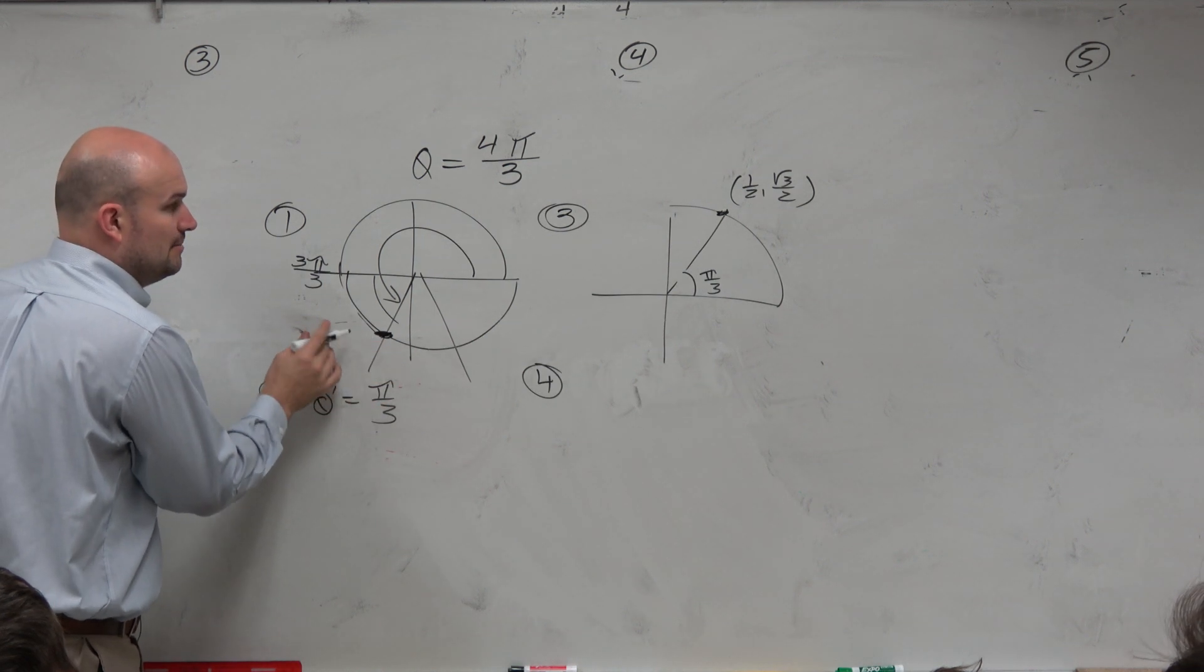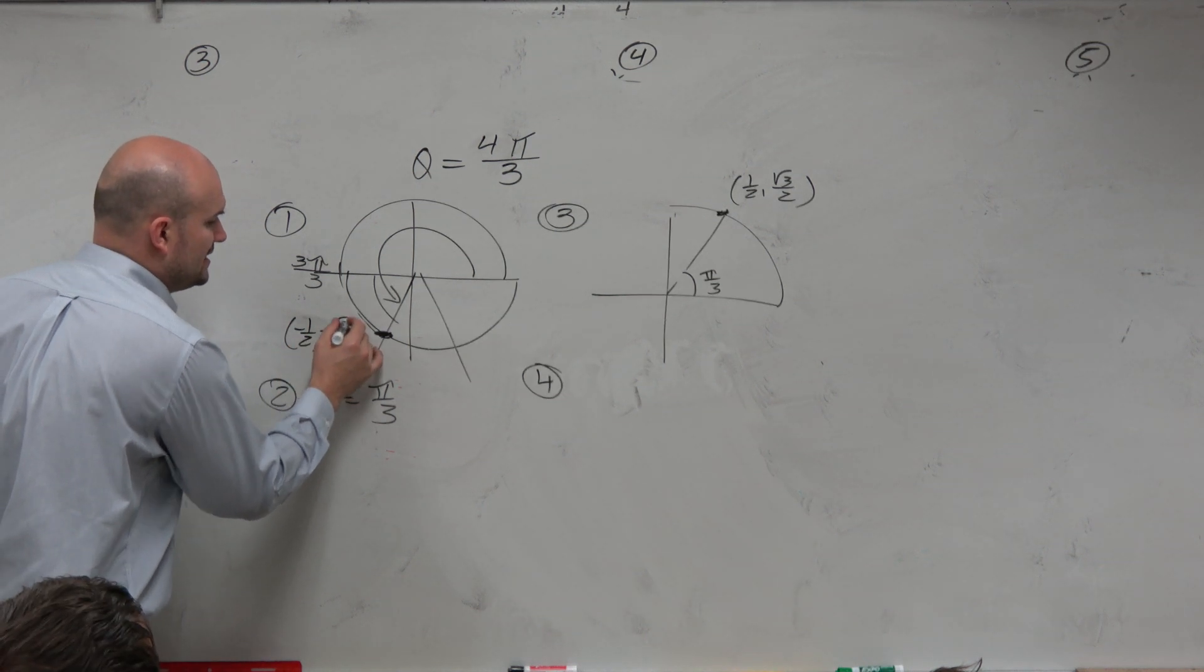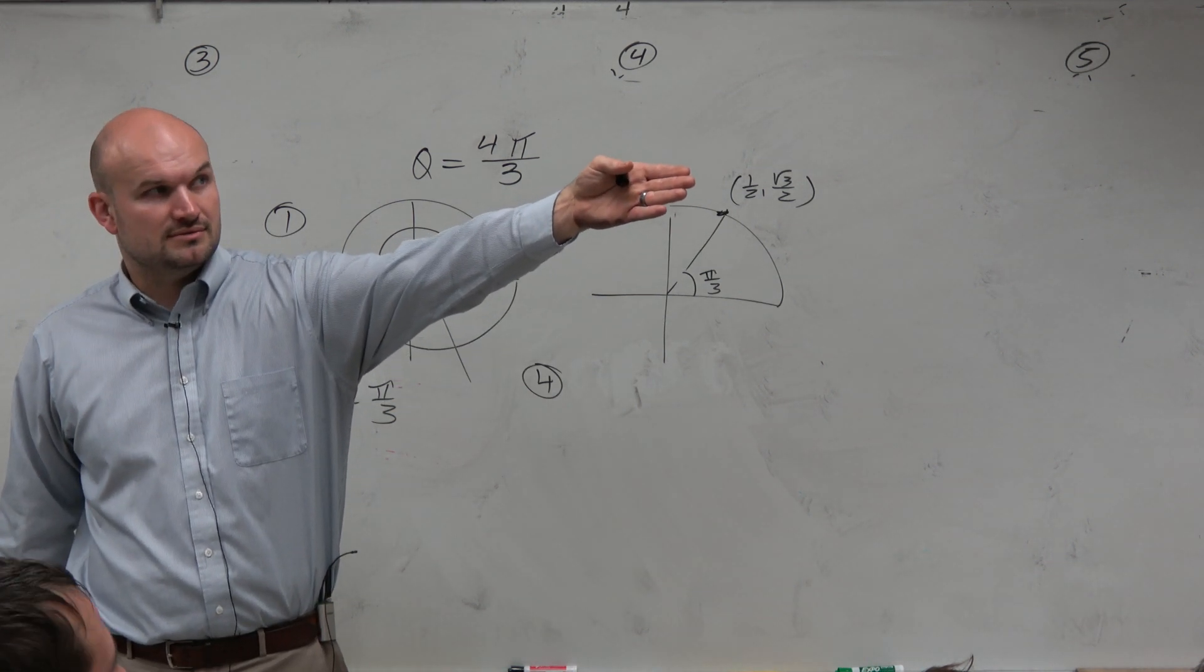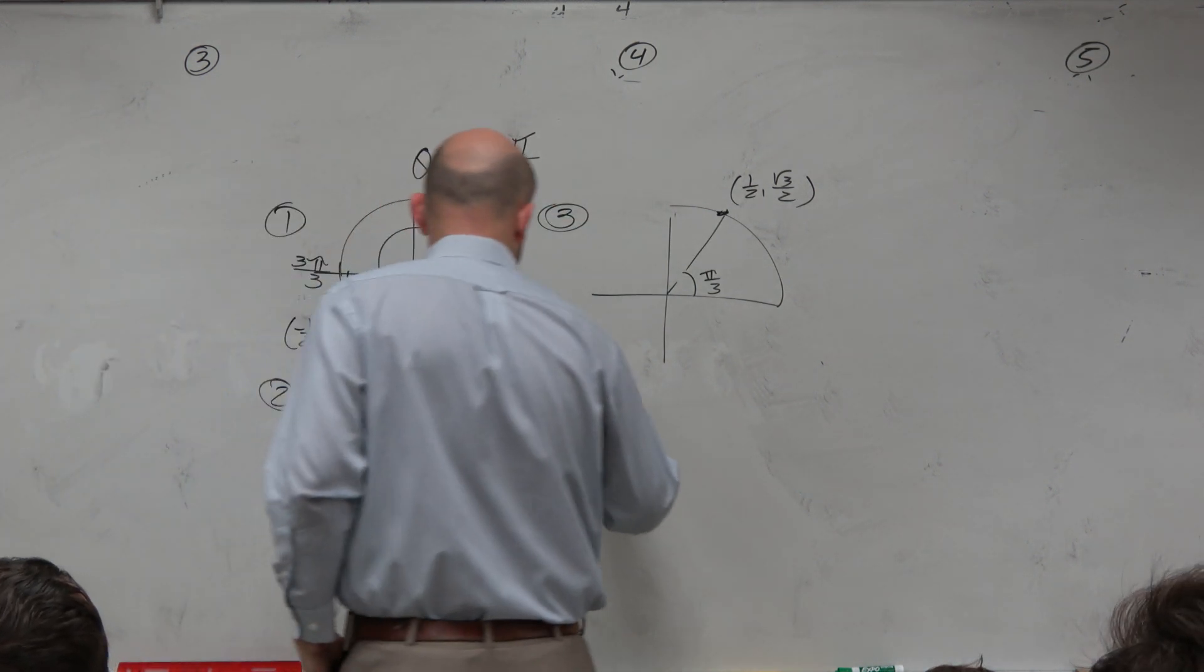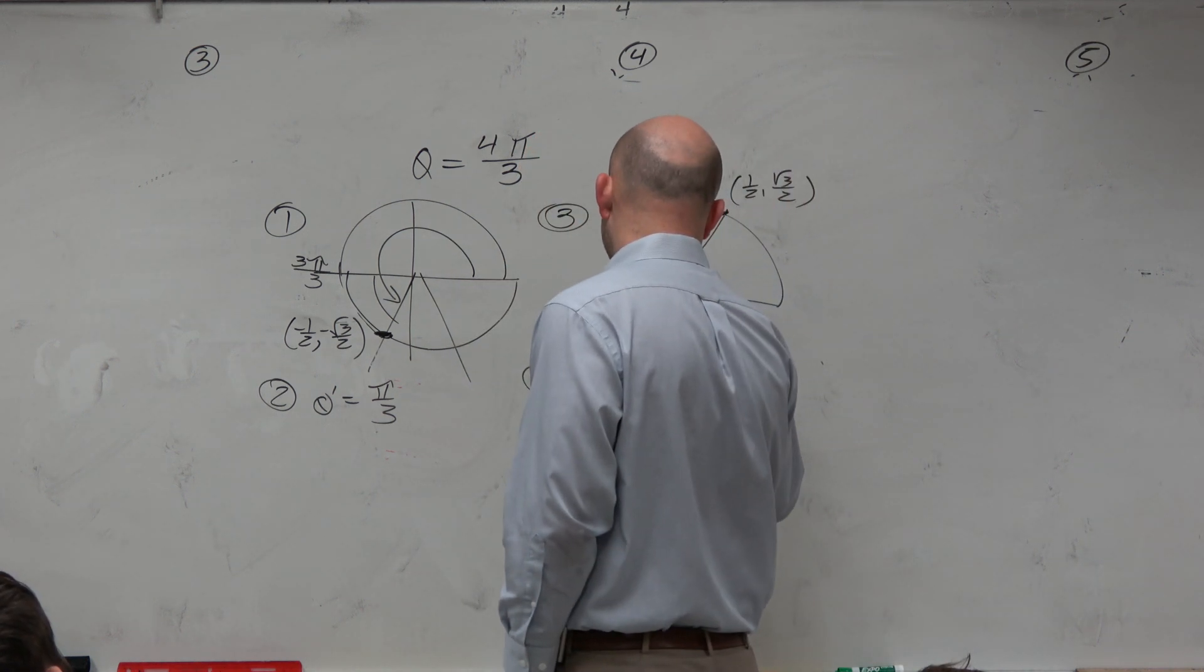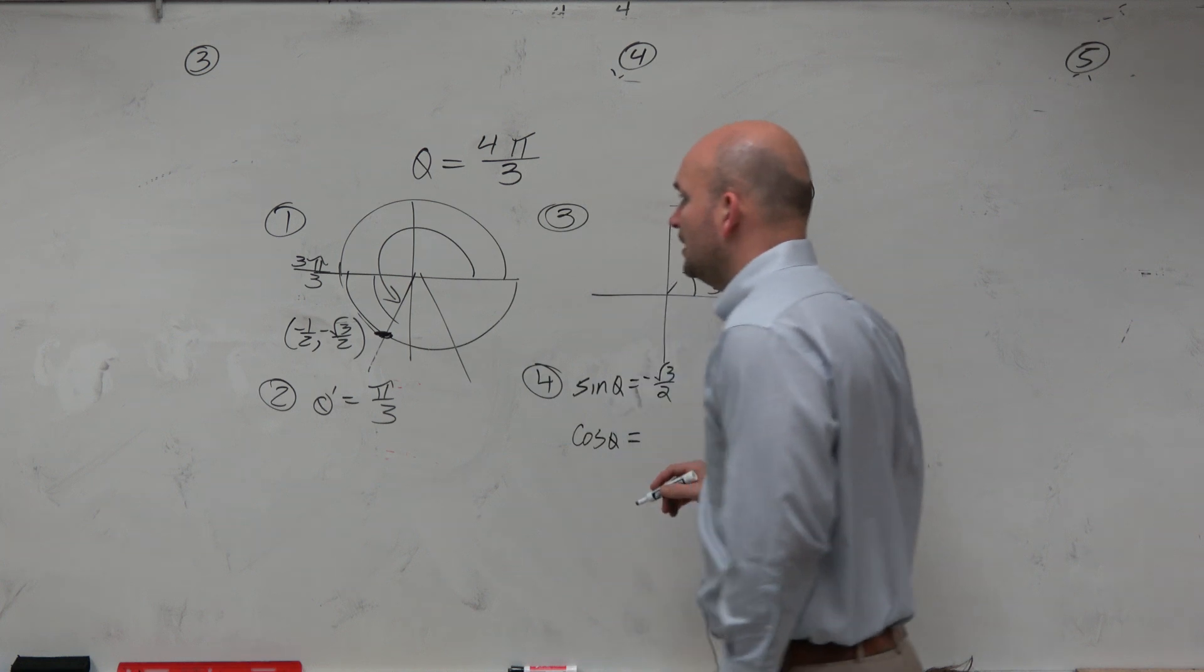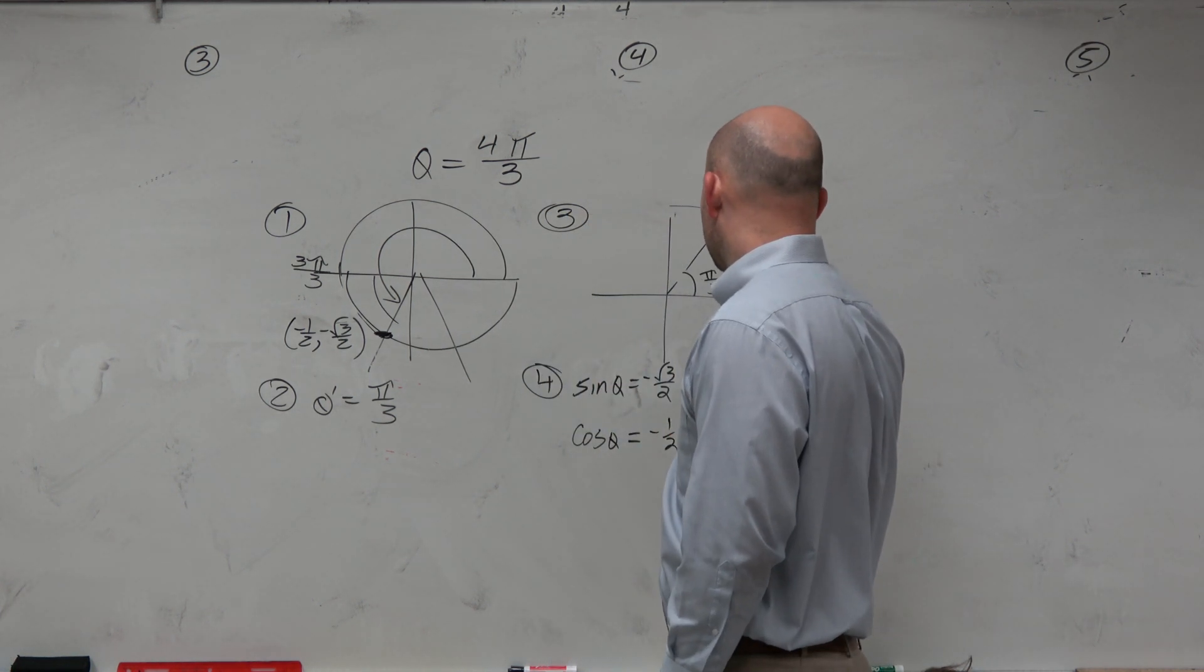So really my point I'm dealing with is -1/2 and -√3 over 2. So now I know my coordinate points. I can just follow my definitions. And that's why these definitions are so great. Sine is just the y-coordinate. So sine of θ is my y-coordinate is -√3 over 2. Well, that was easy. Not really much math to do there. Cosine of θ is the x-coordinate. That's -1/2.